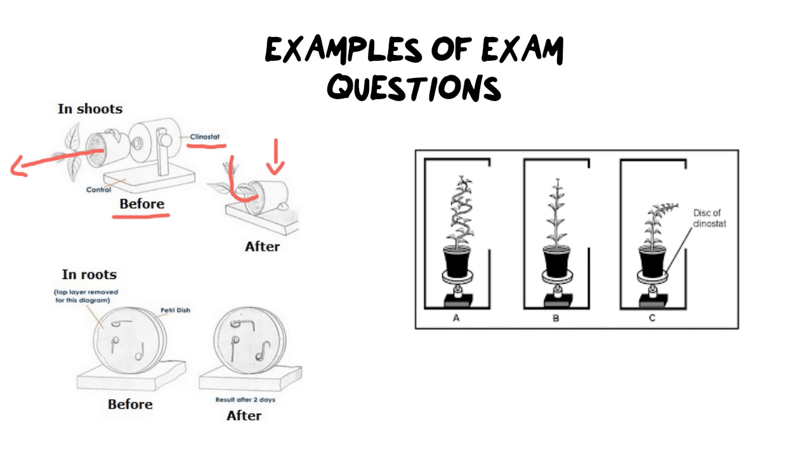And if the clinostat were to stop rotating, this would be the before, when it was rotating, and this would be the after, when it stopped rotating. And that's because it lets the auxins sink down to the bottom of the stem, which then stimulates the auxins in the stem and makes it grow upwards.